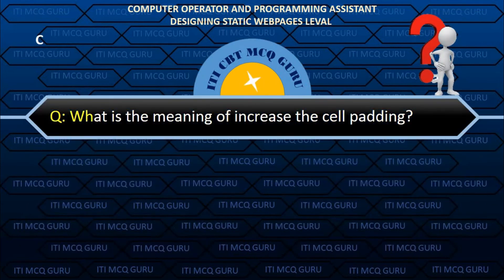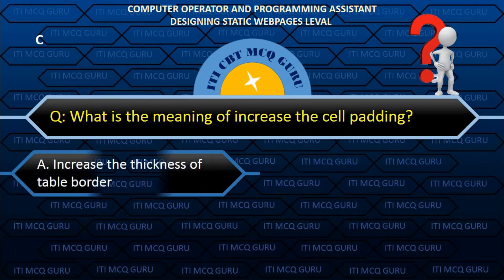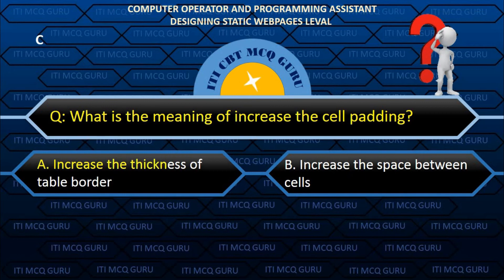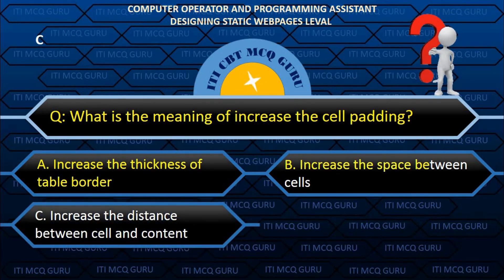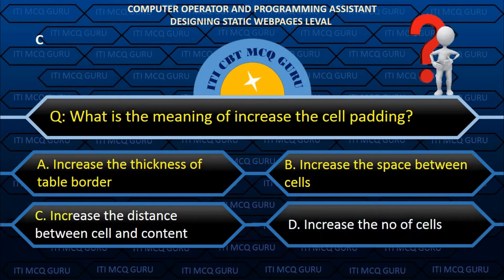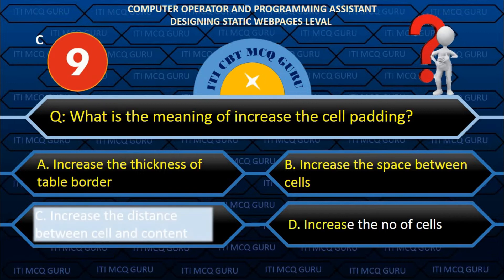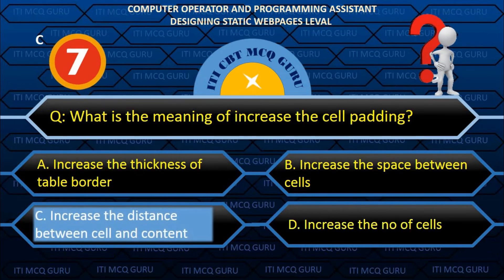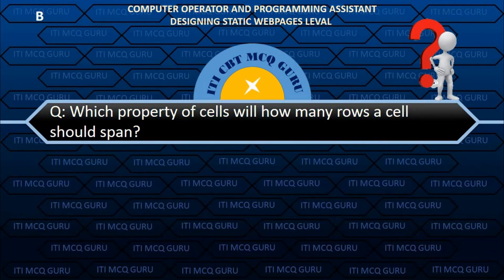What is the meaning of increasing the cell padding? C. Increase the distance between cell and content.